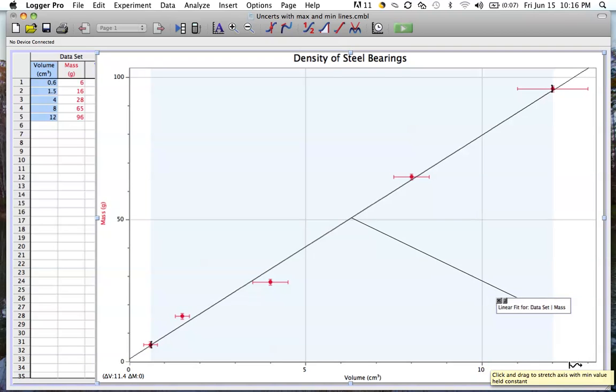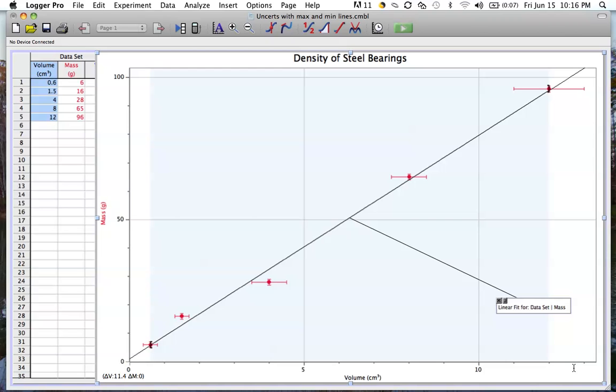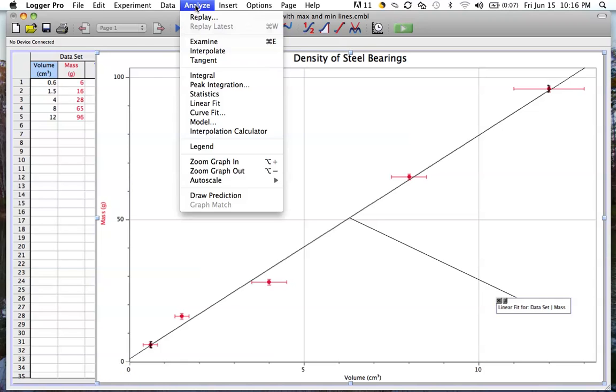I'll rescale this just a little so that I can see all of those data points. Now to add the lines of maximum and minimum slope, we need to go to analyze and model.